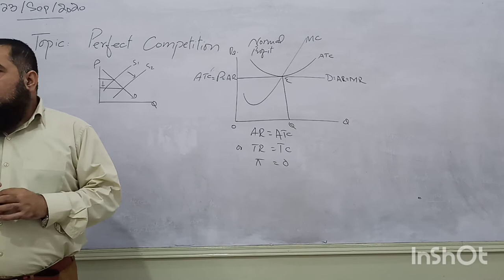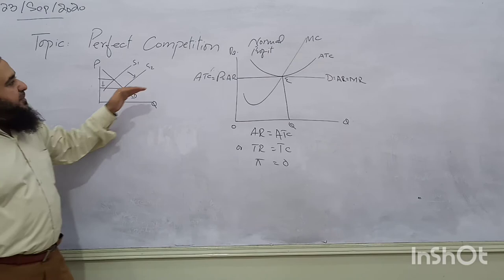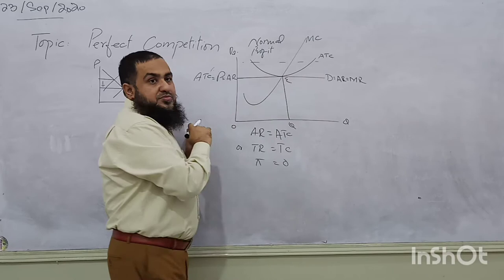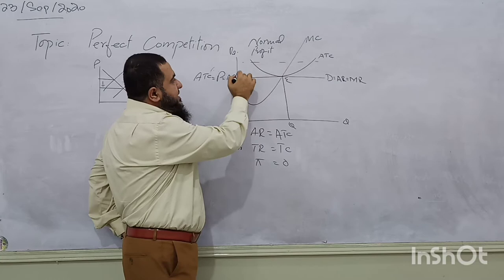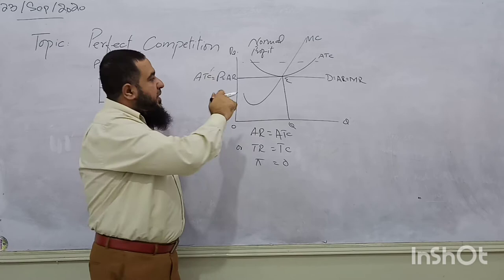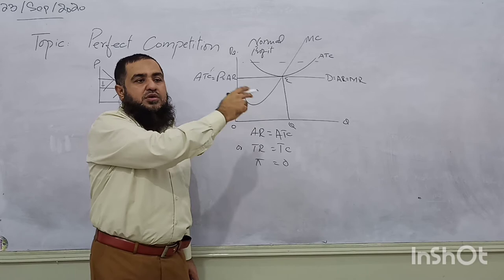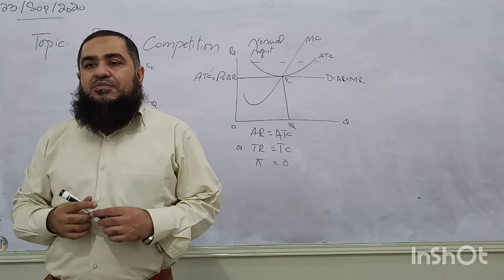When firms are entering the market, the market price is falling. Previously this was the price — now price has gone down. The cost structure remains the same; cost is not changing, but price has gone down. Now the firm is operating at the point where average cost equals average revenue, and therefore the profit of the firm will be normal.